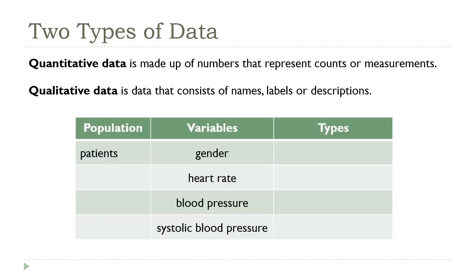Let's look at some examples. The values of gender are words like male and female — these are labels for people but don't represent a measurement, so gender is a qualitative variable. Heart rate, on the other hand, is a measure of how fast your heart is beating, or a count of the number of times it beats per minute. Since it's a measurement or count, heart rate is a quantitative variable.